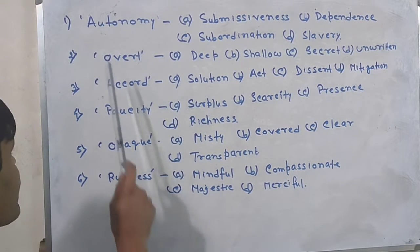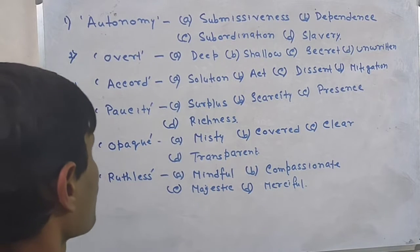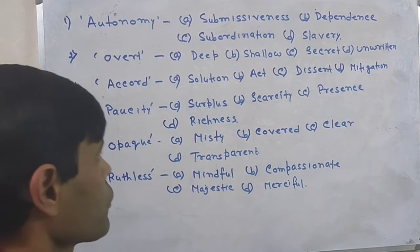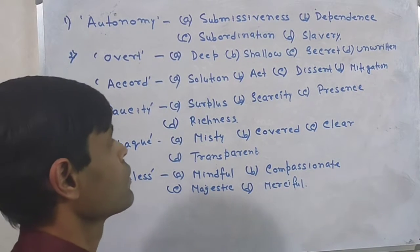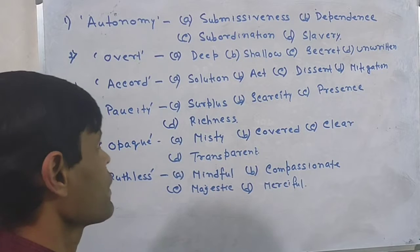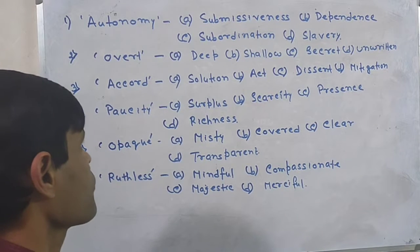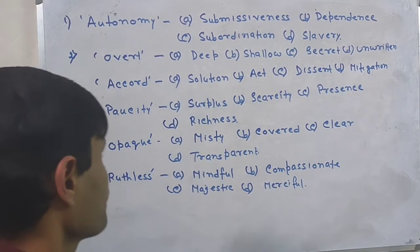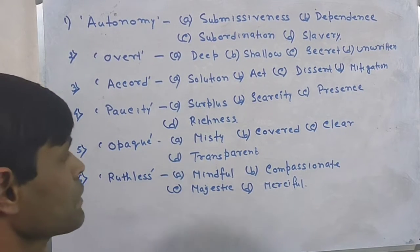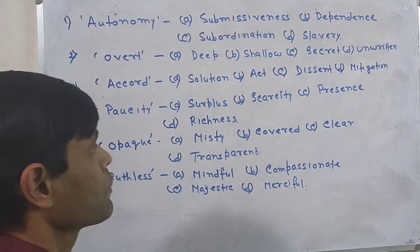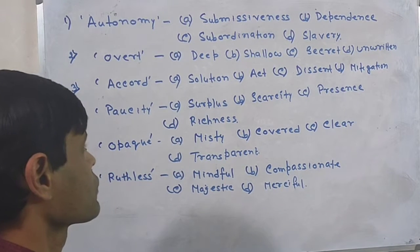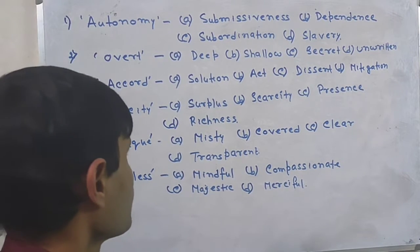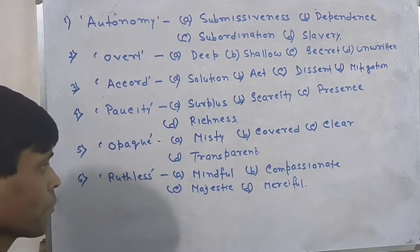The first question here is given as autonomy. There are four options. The first option is submissive, second option dependence, third option subordination, and slavery is the fourth option. Again repeating: first option submissiveness, second option dependence, third option subordination, and fourth option is slavery. Now we have to understand the meaning of autonomy.